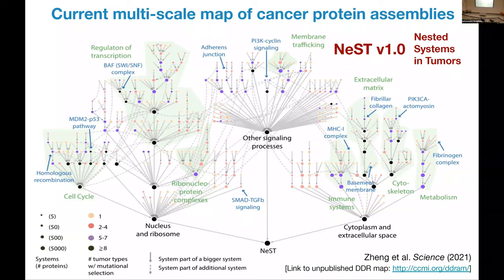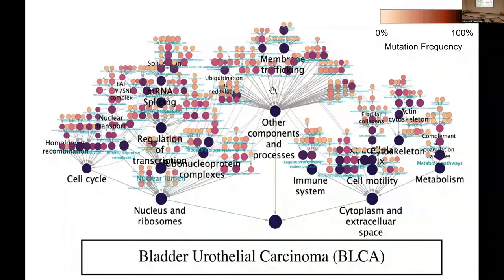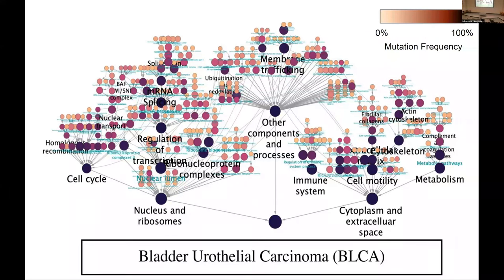Fan Zhang and Mark Kelly in my group have applied similar multi-scale cluster community detection approaches all over the map to get a hierarchy we call NEST — nested systems in tumors. Fan started with the cell at the bottom, so the whole thing is rotated 180 degrees: you can think of the whole set of proteins in tumors at the bottom, then factor them into smaller and smaller components moving up the page. This shows the particular mutation pressures in one disease — bladder cancer — on this map of protein complexes. Every bladder cancer has to mutate cell cycle, but how it does so is what you see as you move up the hierarchy.